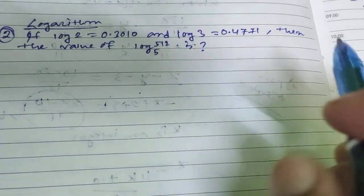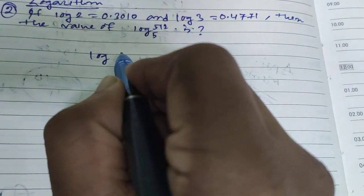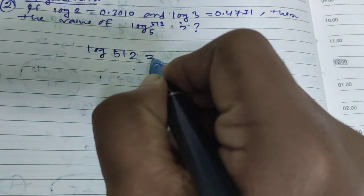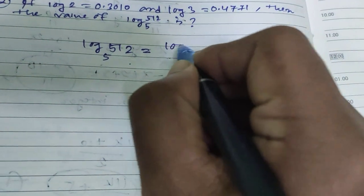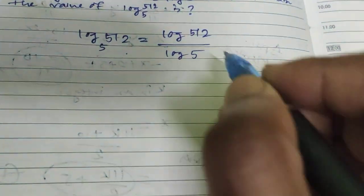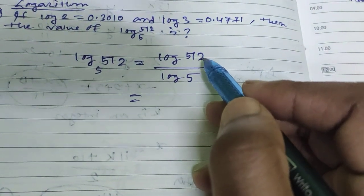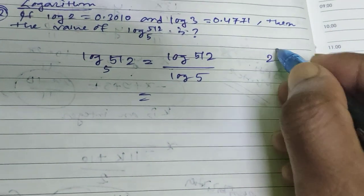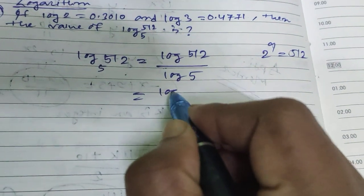Log 512 base 5 means log 512 divided by log 5. Now, 512 is 2 to the power 9, so we have log 2^9 divided by log 5.